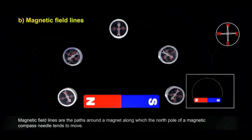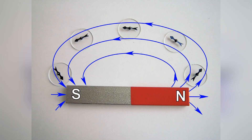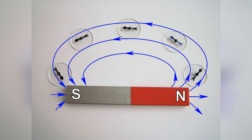The region in which the compass gets influenced like this is called the magnetic field of a magnet. That is, the space around a magnet in which the needle of a compass rests in a direction other than the geographic north-south direction is called the magnetic field of a magnet. As the distance from the magnet increases, the effect of the magnetic field decreases. Magnetic field is a vector quantity, and its direction is the direction in which the needle of a compass rests when placed at that point.